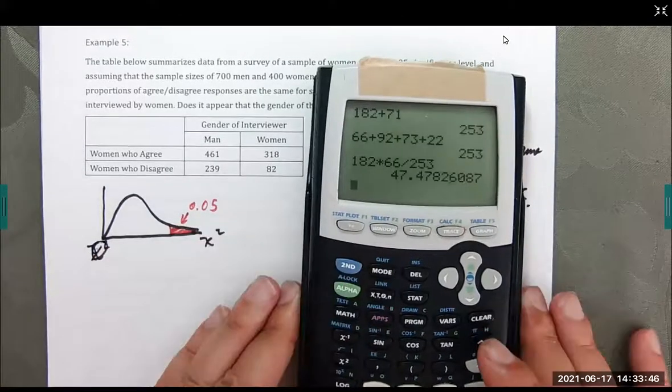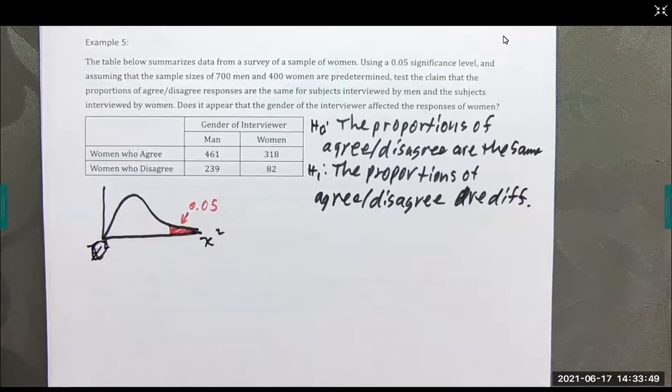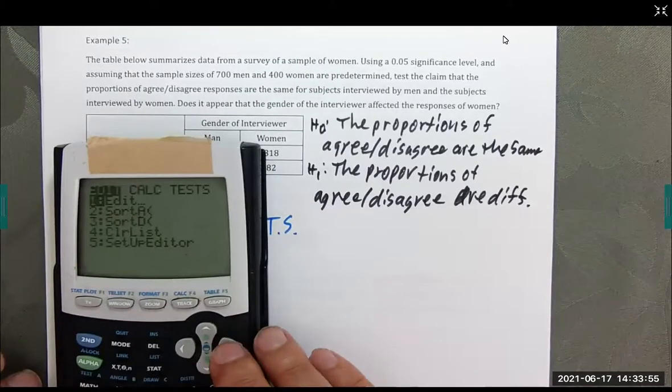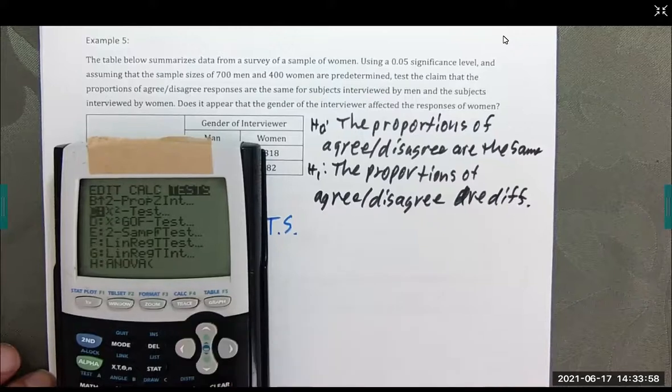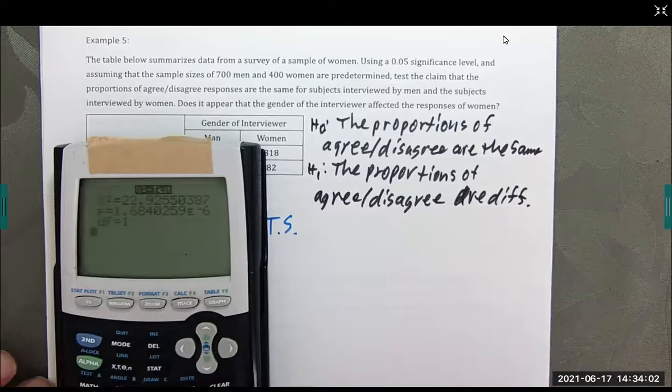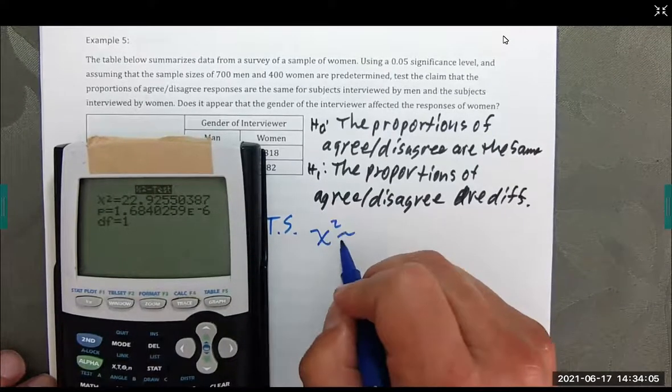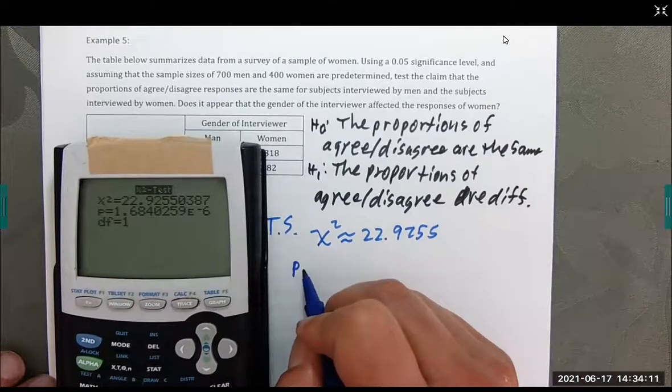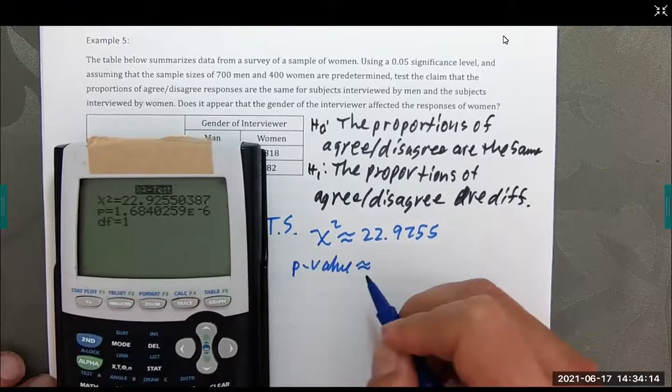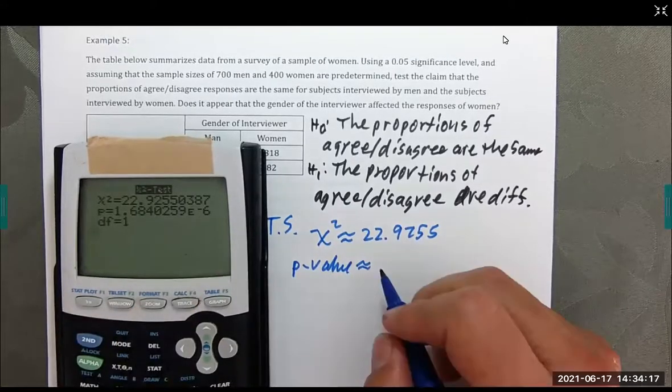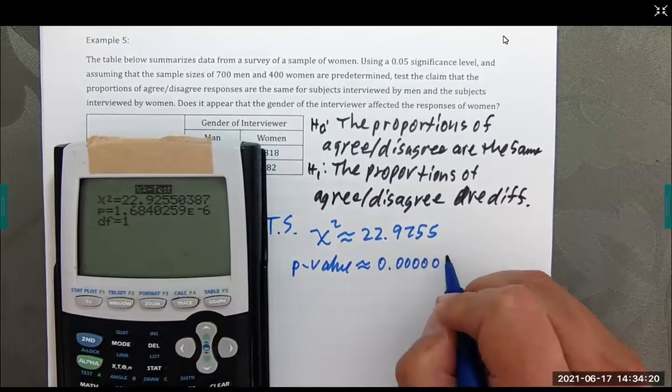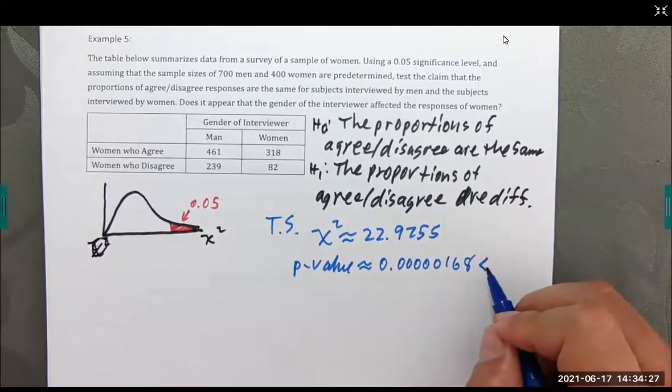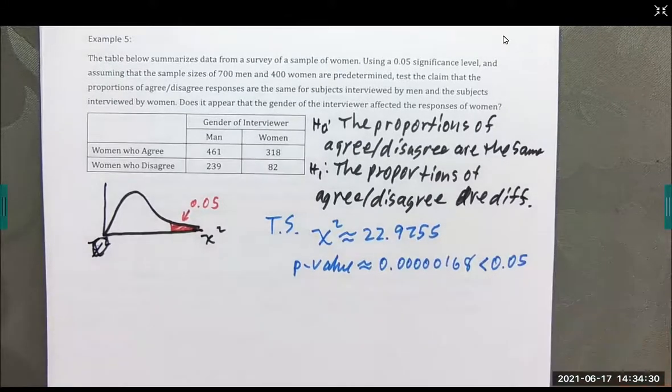All right, let's run our test. Chi-squared test, here we go. 22.9255, p-value. Once again, that's times 10 to the negative 6th. So I'll exaggerate this. So 1, 2, 3, 4, 5, 6. You can see that that is way less than 5%. So we are going to reject the null hypothesis.